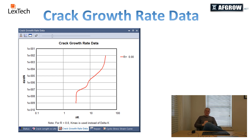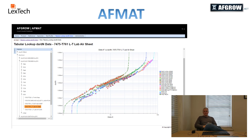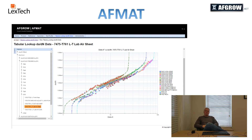A searchable fracture mechanics database known as AFMAP is available to everyone with a current AFGRO license. This database includes tabular crack growth rate data, fracture toughness, R-curve, and crack length versus life test data. We also have downloadable tabular curve fit data for over 70 materials that are ready to use with our tabular lookup model. We are continuing to add more curve fits on a regular basis.